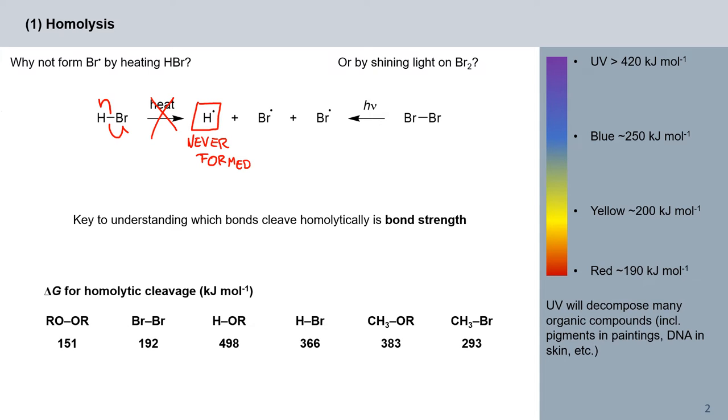However, we could imagine shining light on Br2, our bromine gas. In this case, we represent the homolytic cleavage of our bromine-bromine bond by fishhook arrows and we get our two bromine radicals. The key to understanding which bonds cleave homolytically is bond strength. This hydrogen-bromine bond is highly polarized and therefore fairly strong, whereas our bromine-bromine bond is not very polarized and could be cleaved with ease.